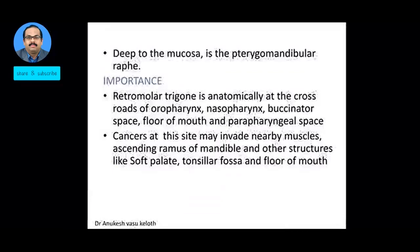So what is the importance of the Retro Molar Trigon? It is anatomically at the crossroads of the oropharynx, nasopharynx, the buccinator space, the floor of the mouth, and the parapharyngeal space — right in the middle of all these areas. A cancer at this site may invade the nearby muscles, the ascending ramus of the mandible, and other structures like the soft palate, tonsillar fossa, and the floor of the mouth.